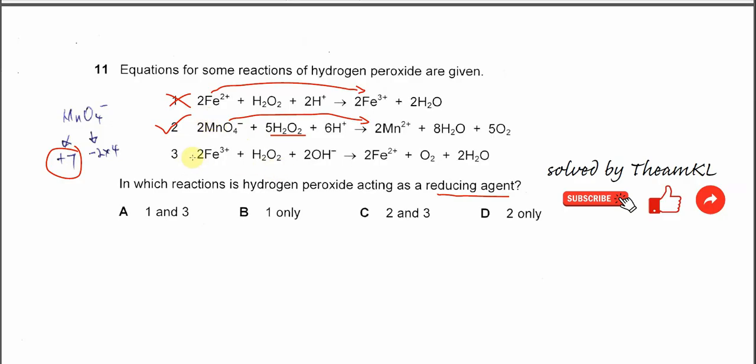For the last equation, H2O2 reacts with iron 3. Iron 3 goes to iron 2, from positive 3 to positive 2. So it's being reduced, and H2O2 is a reducing agent.